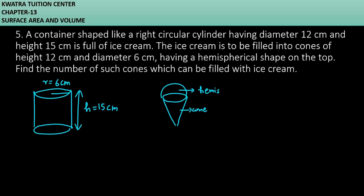After this, what information did they give? That the cone height is 12 cm. This is 12 cm. And how much diameter is given? 6. This means radius is r' equals 3 cm and h' is 12 cm.